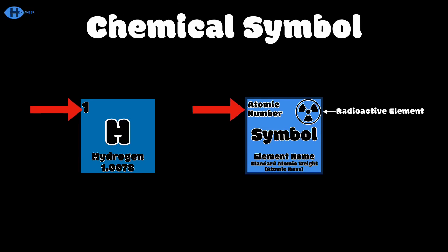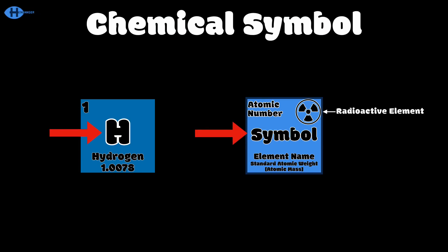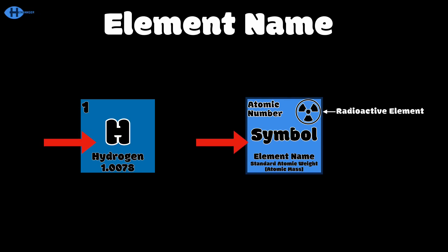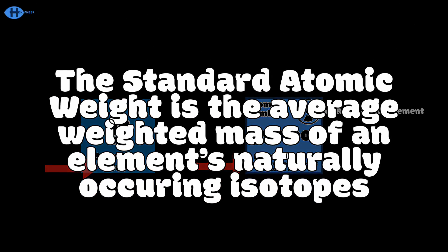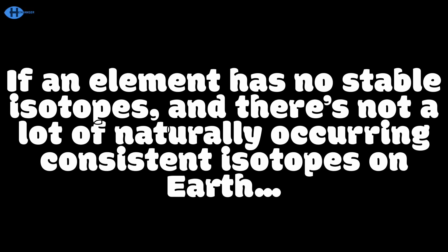The symbol in the middle is the symbol of an element, and right below that is the element's name. At the very bottom is the atomic mass or standard atomic weight. Standard atomic weight is the average weighted mass of an element's naturally occurring isotopes.